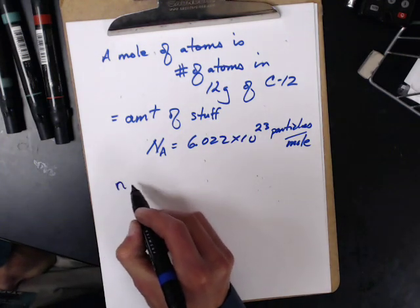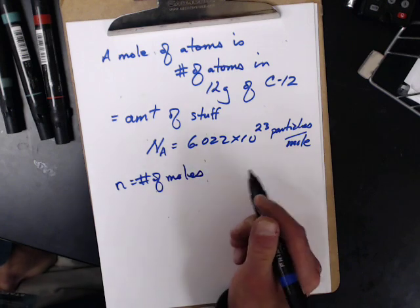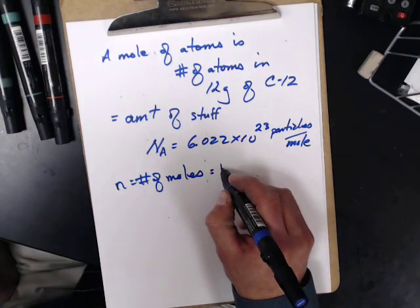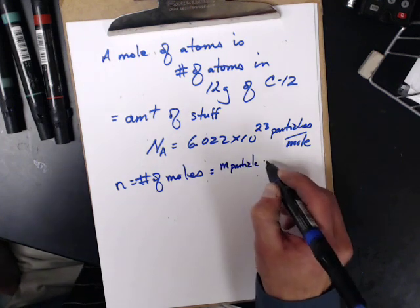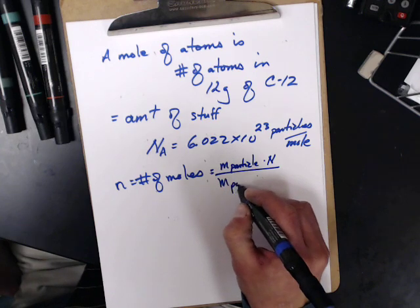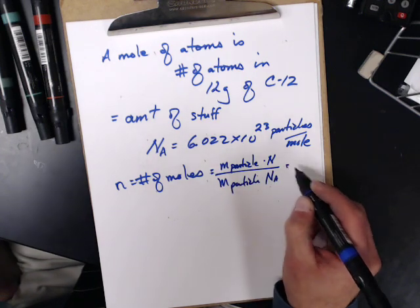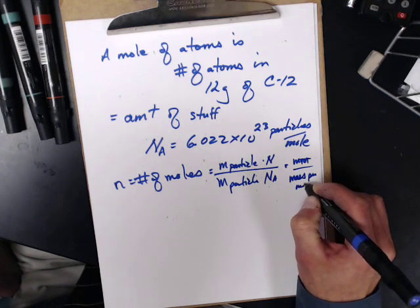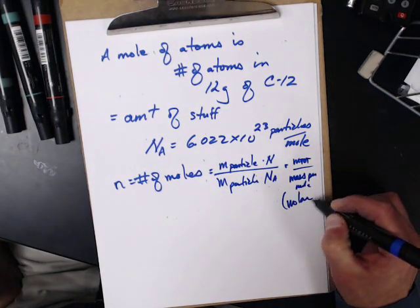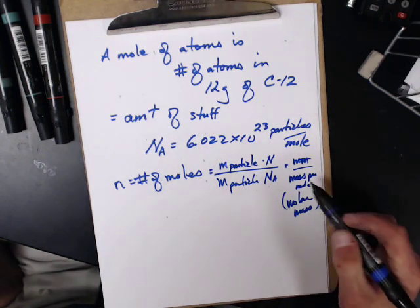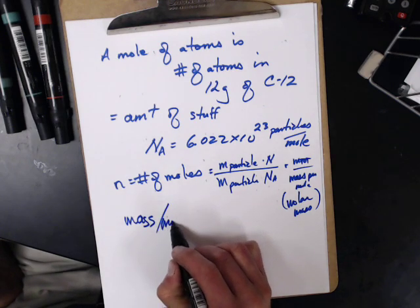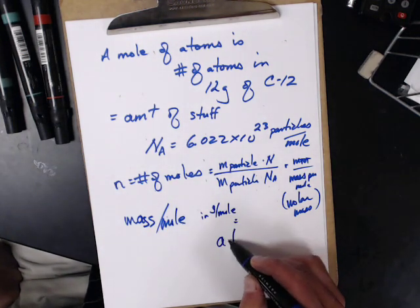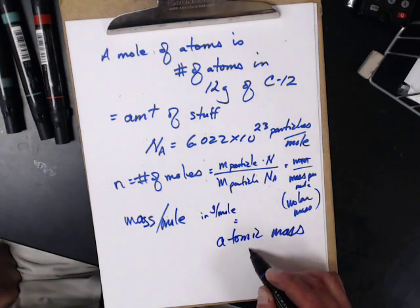So, what's nice is, we use N for number of moles. And the number of moles can be written a couple different ways. We can talk about the mass of a particle times the number of particles you have divided by the mass of a particle times Avogadro's number, and that's going to give you your total mass divided by the mass per mole, which is also called the molar mass.